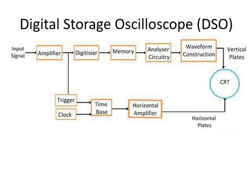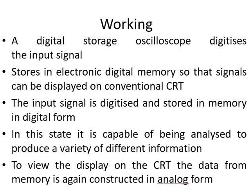If there is a question in the exam — explain the digital storage oscilloscope — we have to draw the block diagram and explain all blocks one by one: how the amplifier works, the digitizer, memory, how the sampler works, how the analog-to-digital converter works, how the circuit is analyzed, and the waveform construction. In this lecture we completed the digital multimeter, function generator, and DSO. For all three topics the question pattern is the same: explain the block diagram of any of these instruments. Power scope and auto transformer will be covered in the next lecture.